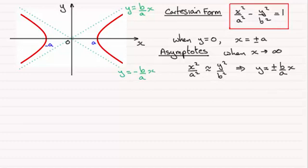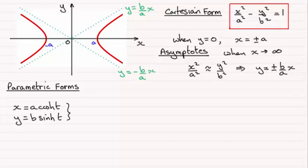Now the next thing I want to look at is the parametric forms of the hyperbola. And there's two parametric forms that we can have. The first one is the hyperbolic form where x equals a cosh t and y equals b sinh t.